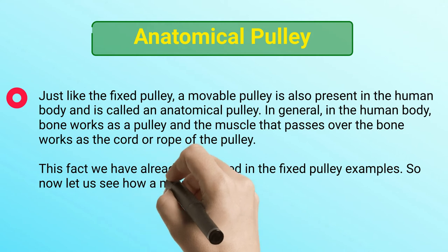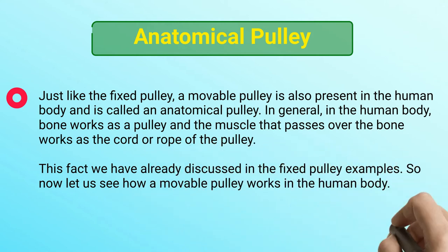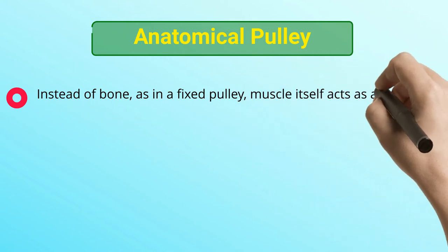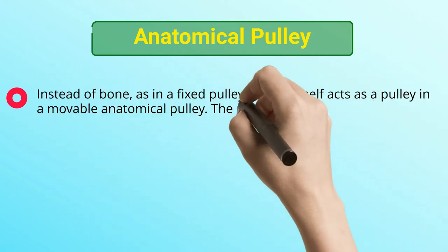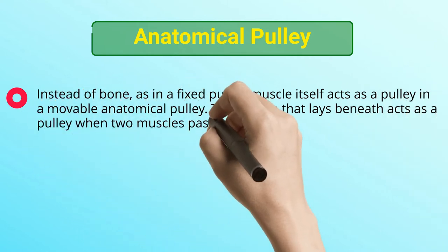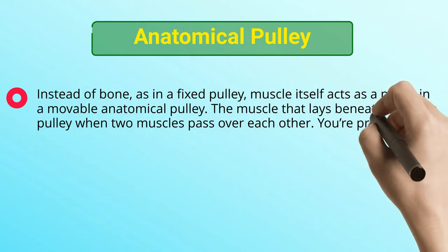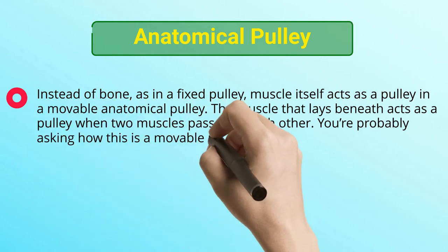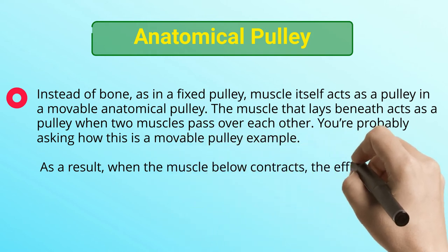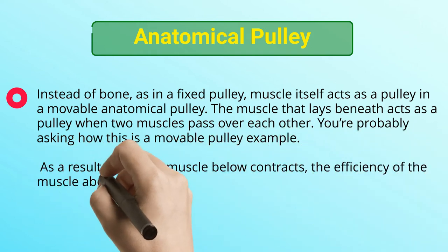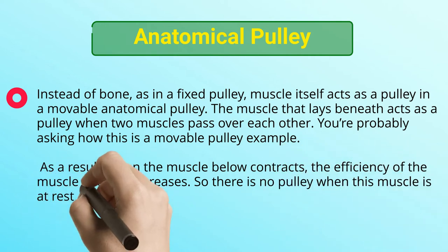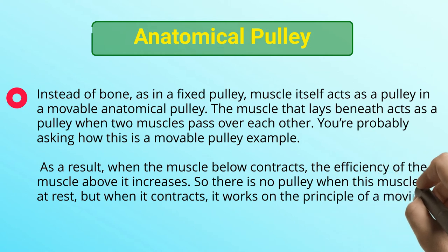So now let us see how a movable pulley works in the human body. Instead of bone, as in a fixed pulley, muscle itself acts as a pulley in a movable anatomical pulley. The muscle that lays beneath acts as a pulley when two muscles pass over each other. When the muscle below contracts, the efficiency of the muscle above it increases. So there is no pulley when this muscle is at rest, but when it contracts, it works on the principle of a moving pulley.